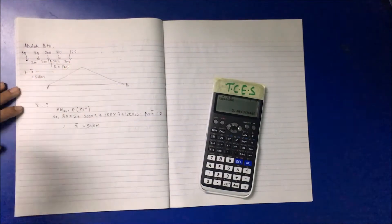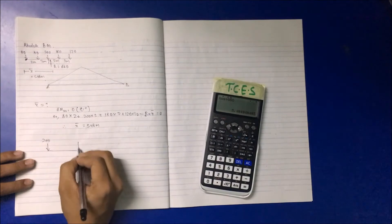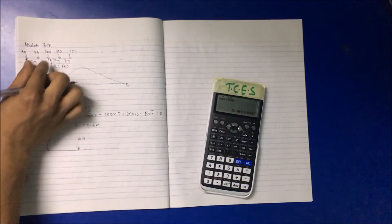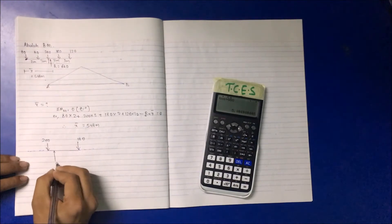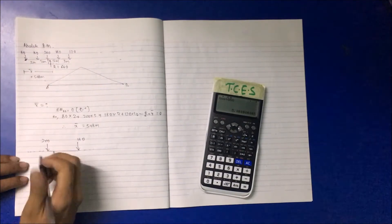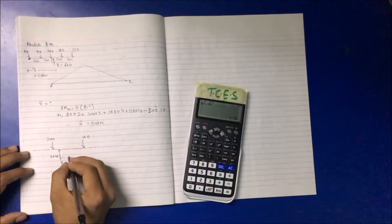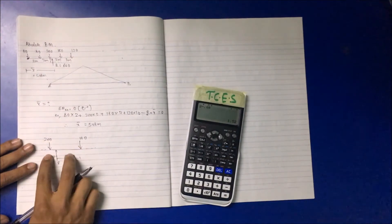The resultant is acting in the section between the 200 and 180 kilonewton loads. Zooming into that section: the span up to 200 kN is 5 meters, and X̄ is 5.48 meters, so the resultant acts 0.48 meters beyond the 200 kN load. The remaining distance from the other side is 1.52 meters.